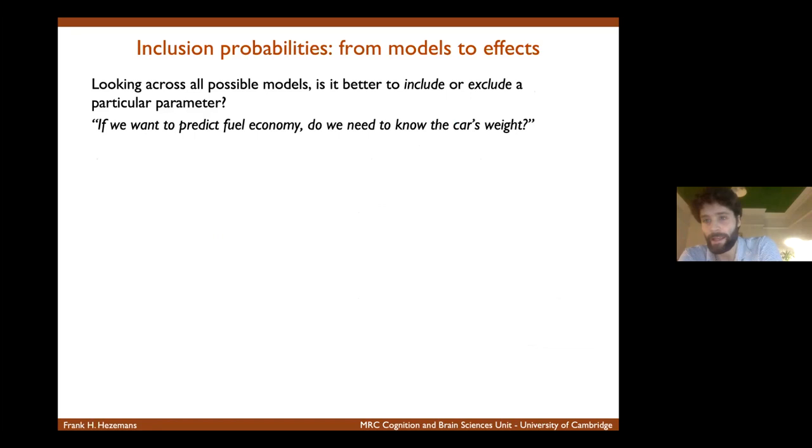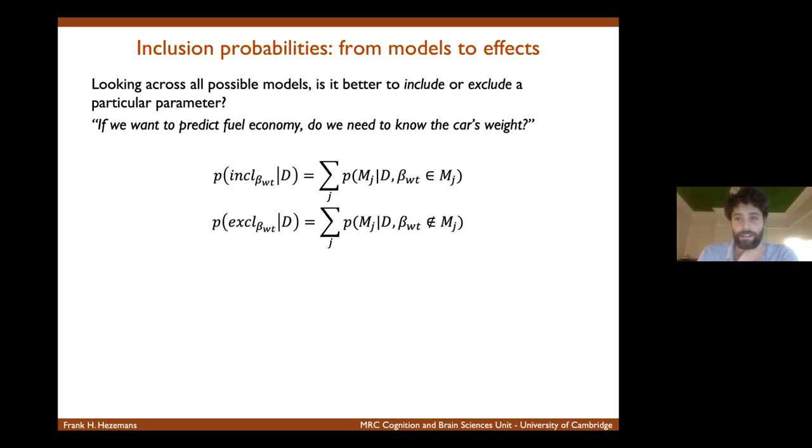Okay, one last thing that I want to talk about now quickly is to go from models to talk about specific effects. And we can achieve this using Bayesian model averaging by computing something called inclusion probabilities. So here what we're asking is, if we look across the full space of all the different models, is the data best modeled by, is it better to include a particular predictor or to exclude it? So for example, if we ask if we want to predict fuel economy, is it really necessary to include the car's weight? And this is actually quite simple. So you can just compute this inclusion probability as the sum of the posterior model probabilities for all models that include this particular predictor. In other words, it's the sum of posterior probability of the family of models that include this predictor.